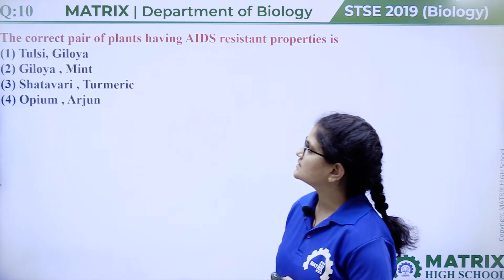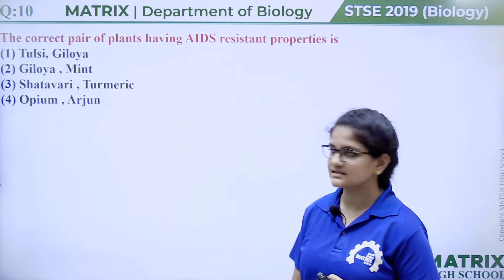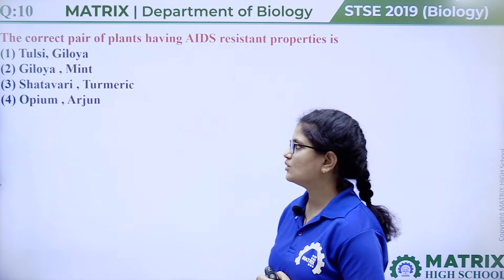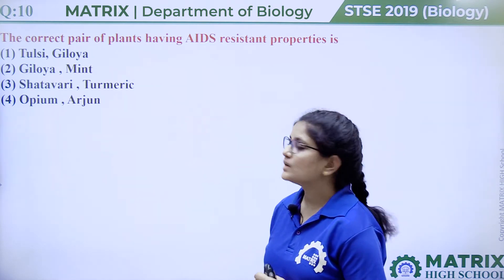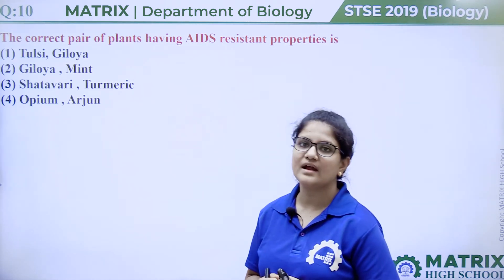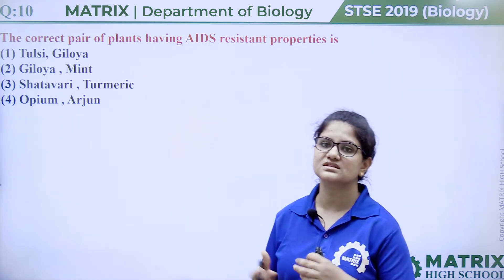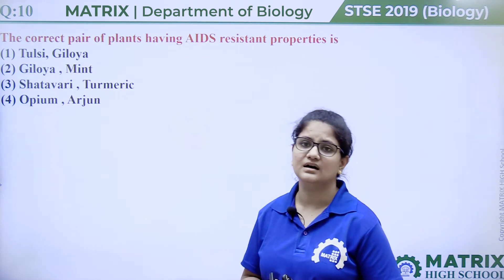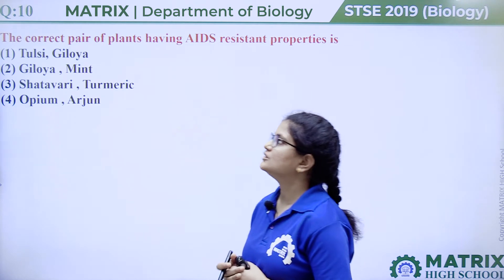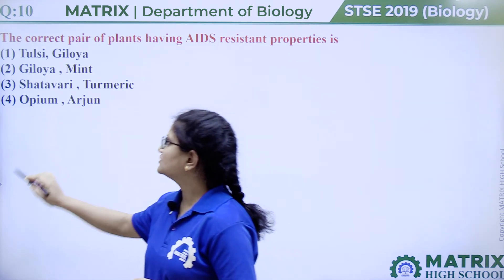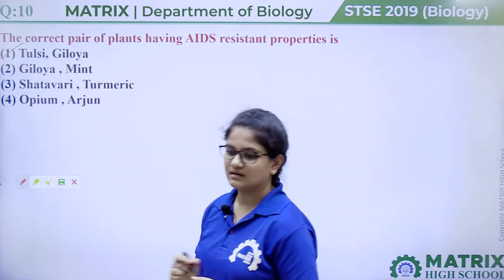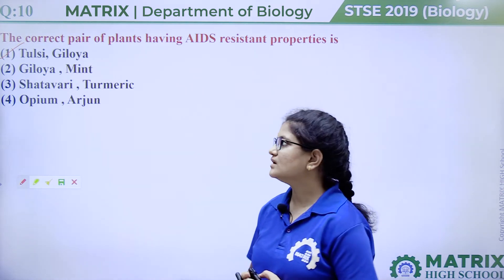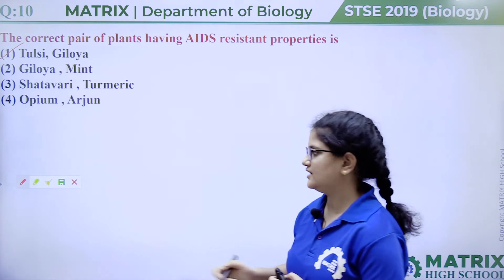Question number ten: the correct pair of plants having AIDS-resistant properties is Tulsi-giloy, giloy-mint, Shatavari-turmeric, or opium-arjun. AIDS is an acquired immunodeficiency syndrome in which the immune system becomes weak. The correct combination is Tulsi and giloy, as these two substances enhance the immune system. So the answer is Tulsi and giloy.